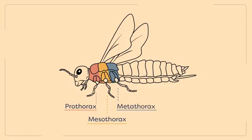Note that each thoracic segment bears a pair of legs. Wings, if present in adults, are only found on the meso and the metathorax.